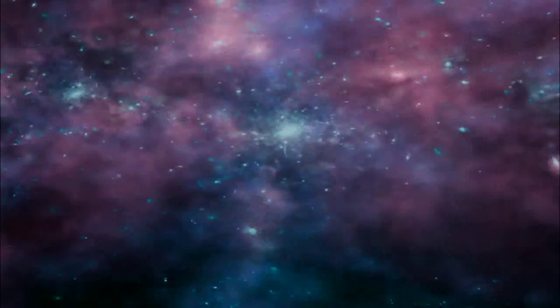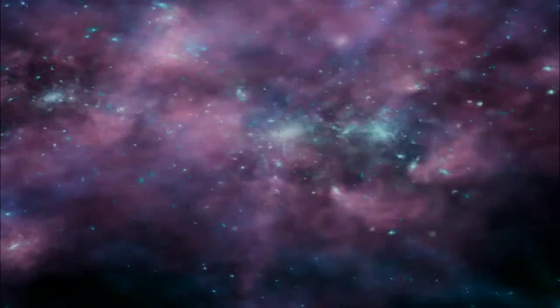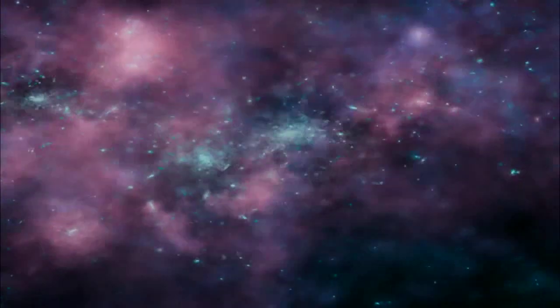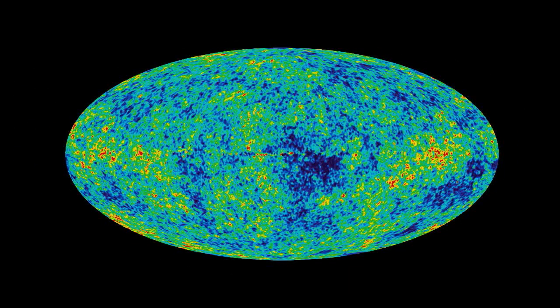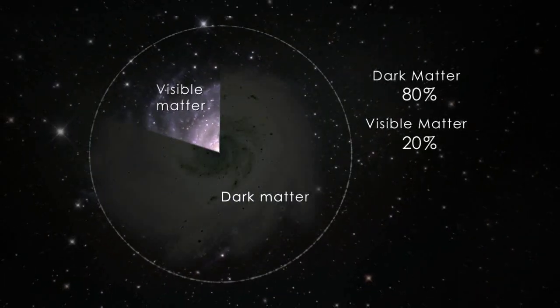No one knows what this missing mass, now called dark matter, actually is. But studies by NASA's WMAP spacecraft of the cosmic microwave background, the oldest light in the universe, show how much is out there. Dark matter outnumbers ordinary matter by 4 to 1.